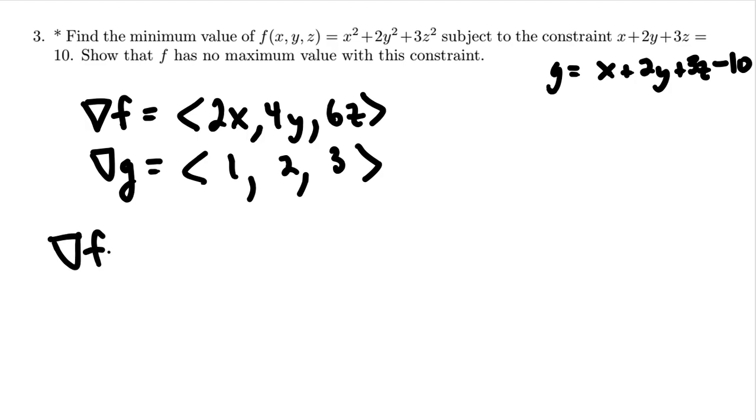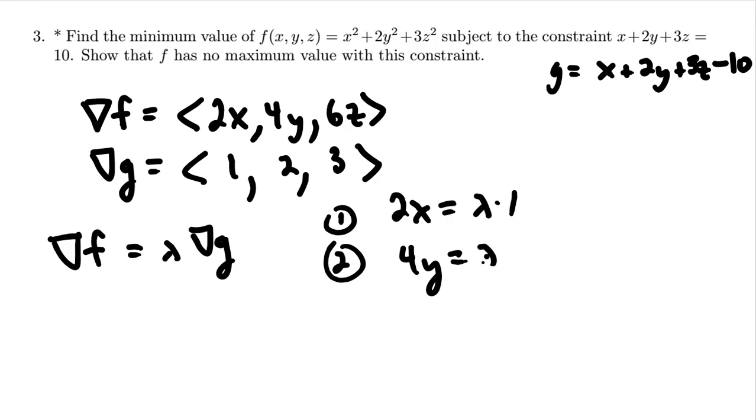The equation that is the engine behind Lagrange multiplier method is that the gradient of f is lambda times the gradient of g. This leads to three different equations. Number 1, 2x is equal to lambda times 1. Number 2, 4y is equal to lambda times 2. And number 3, 6z is equal to lambda times 3.